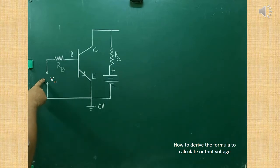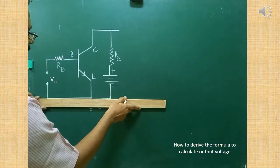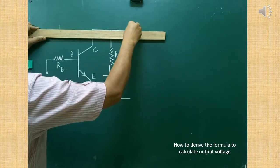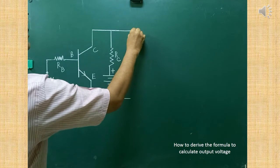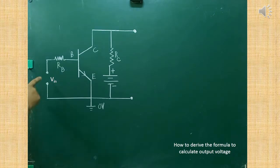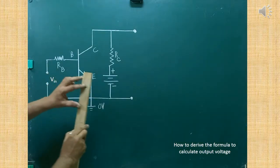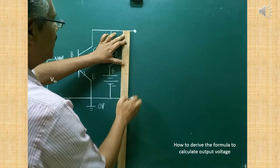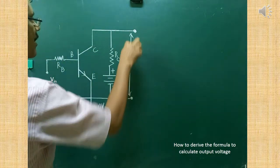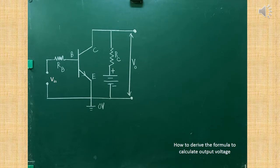If you give input here, its corresponding output can be taken across these two terminals. Extend the lines — across these two terminals, the output can be taken. If you give the input, its corresponding output can be taken here, and the output is called VO. With the help of a voltmeter across these two terminals, the output can be measured. Since it is output voltage, we can call it VO.